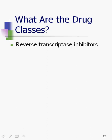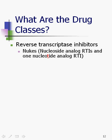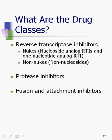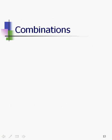We have reverse transcriptase inhibitors — both nukes and non-nukes — so nucleoside analog reverse transcriptase inhibitors, and there's one nucleotide analog reverse transcriptase inhibitor. Non-nucleosides are non-nucleoside analog reverse transcriptase inhibitors, but they're still in the same class and work at the same place in the life cycle. We also have protease inhibitors, fusion and attachment inhibitors, and integrase inhibitors. We expect to have more in the future.